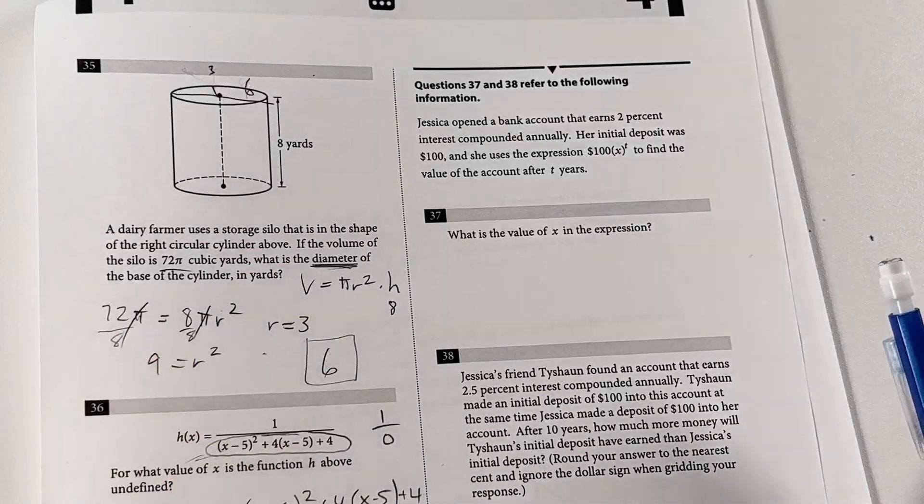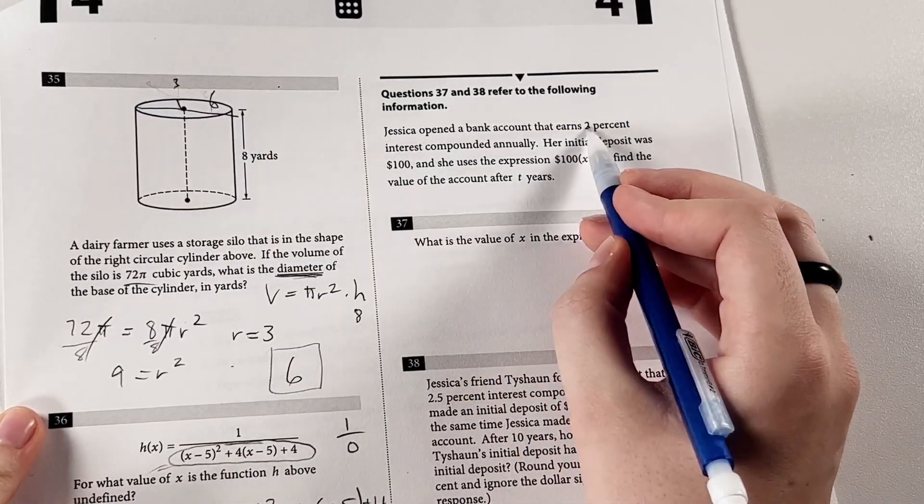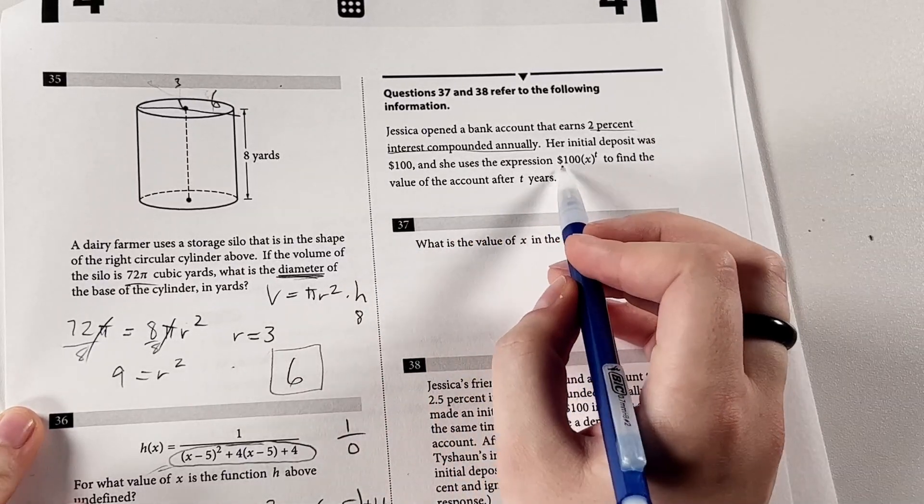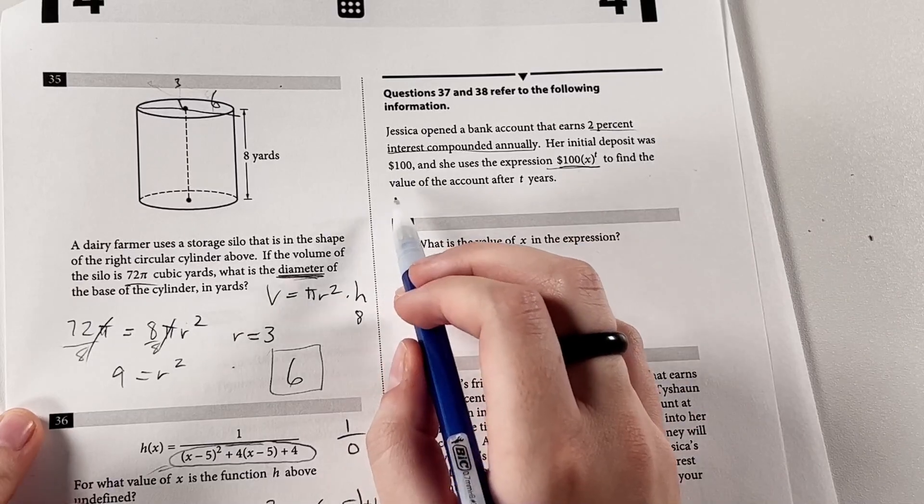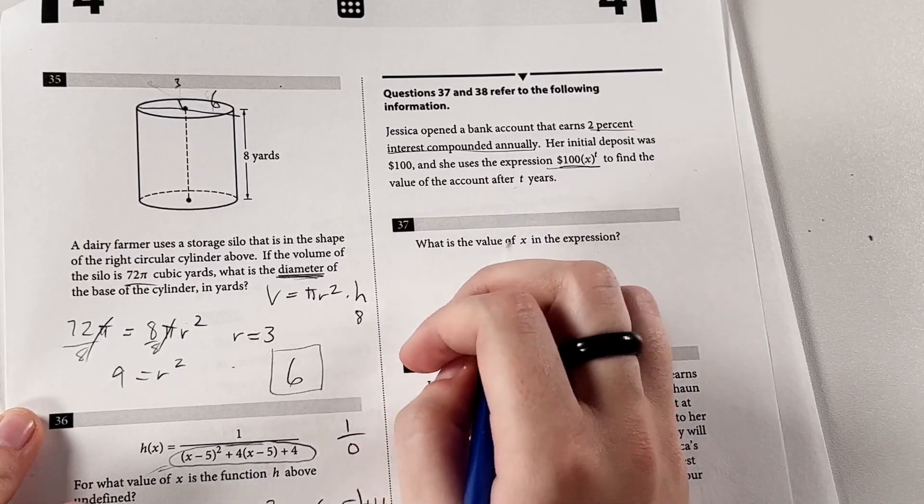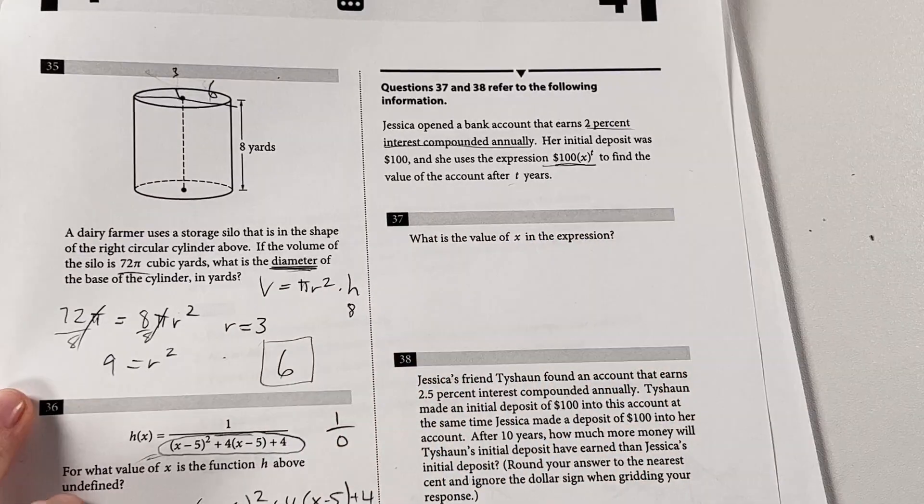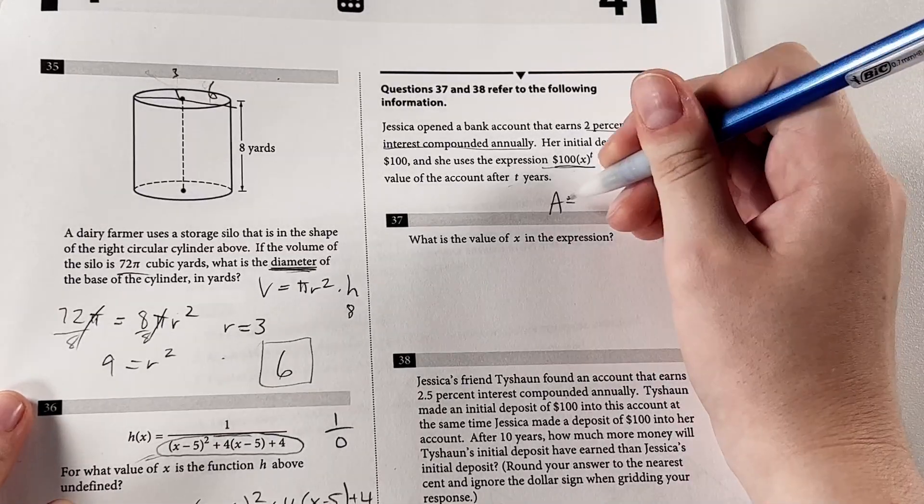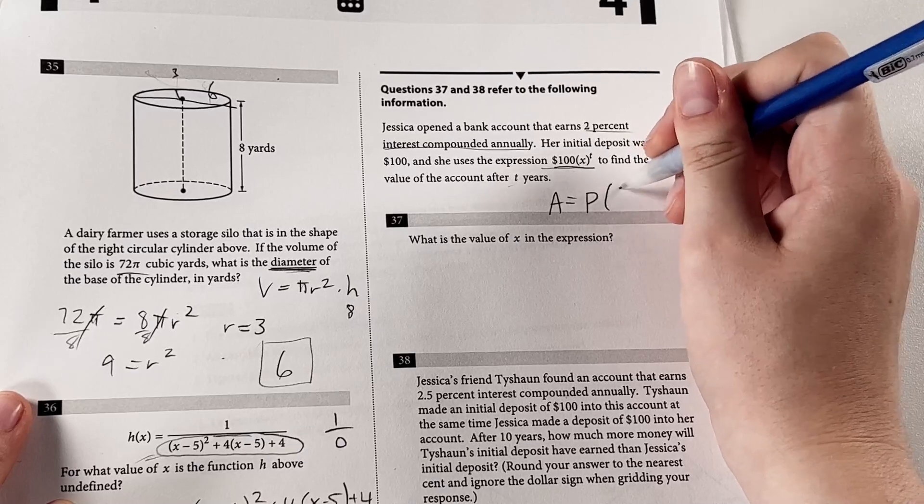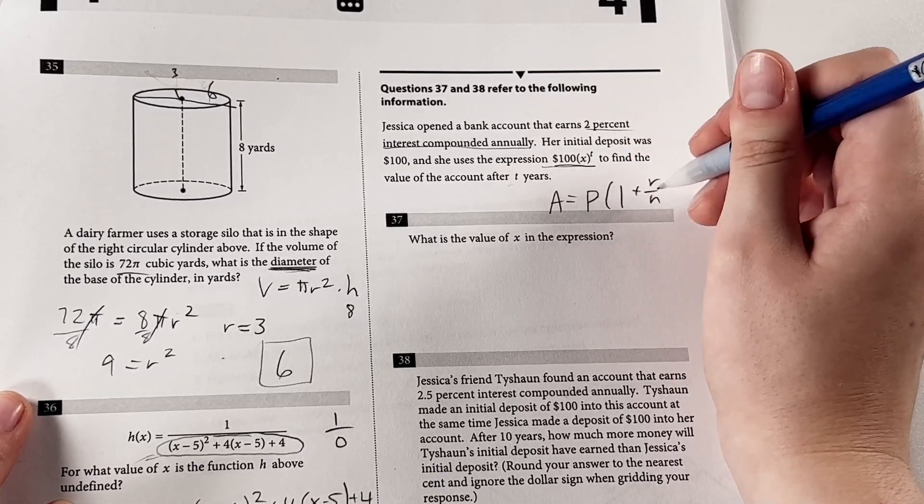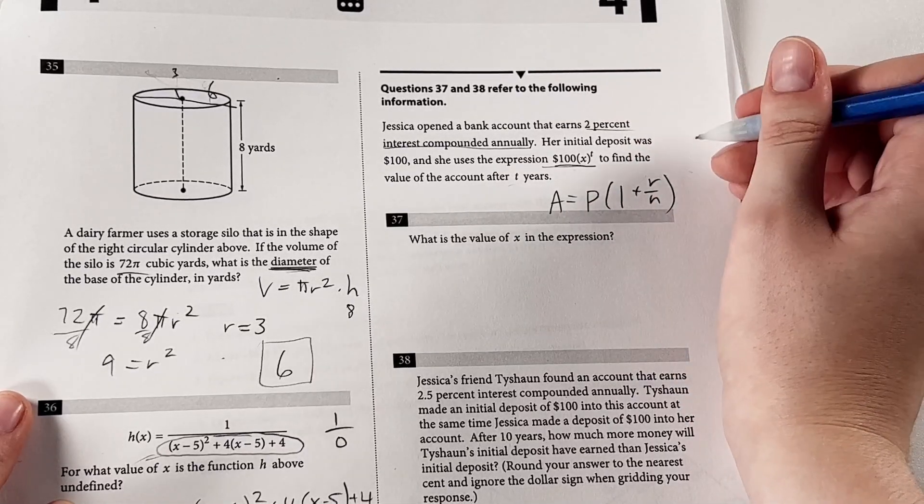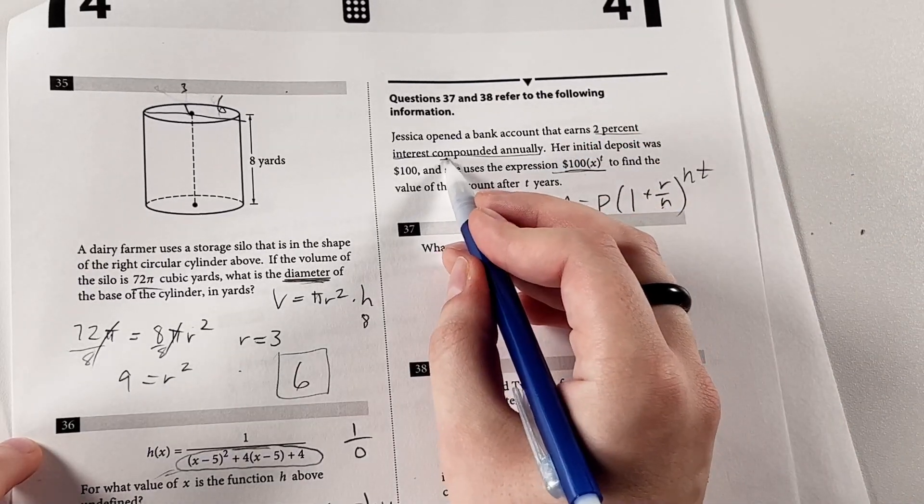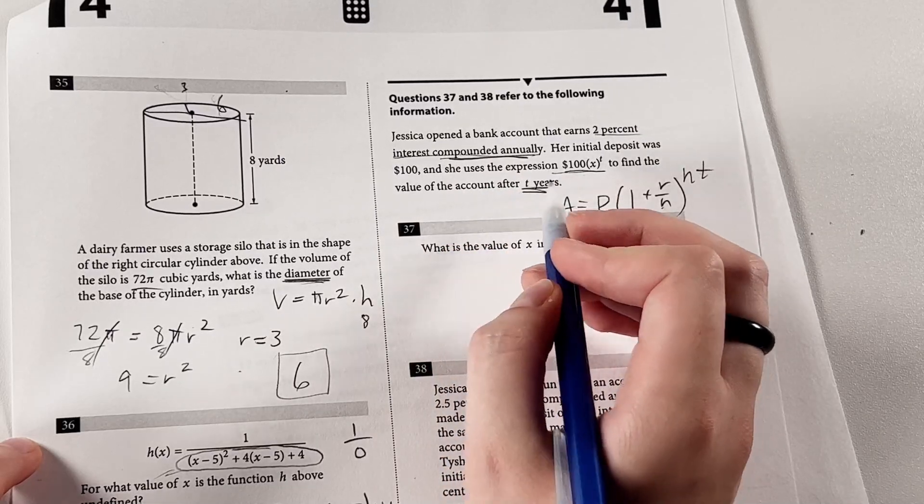So for our last problem, Jessica opened a bank account that earns 2% interest compounded annually. Her initial deposit was $100 and she uses the expression 100 times x to the t to find the value of the account after t years. Now what is the value of x in the expression? So now it's probably a good reminder of the compound interest equation. You have your final value equals your initial value times, this is basically your rate, but written a little more complicated of a way, to the power of t.